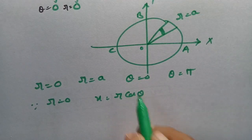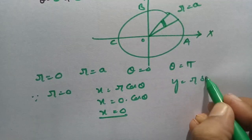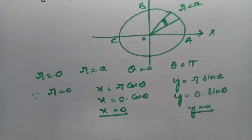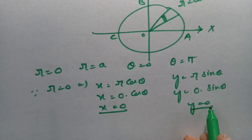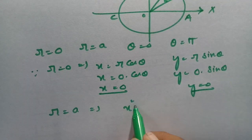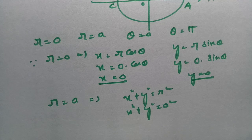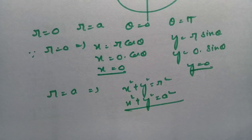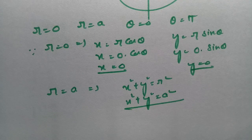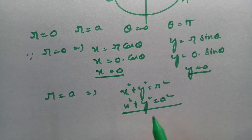Using x equals r cos θ and y equals r sin θ: when r equals 0, both x and y equal 0. When r equals a, x² plus y² equals a², which is a circle of radius a. Since θ goes from 0 to π, this covers the upper semicircle. We need to determine the Cartesian limits for x and y.